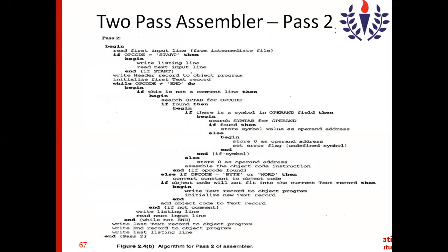Hi everyone, let us resume the session with the two-pass assembler. We discussed about the pass one algorithm in the previous session — the steps involved, how the assembler processes the source program, and how it generates the intermediate file. Now we move on to pass two of the two-pass assembler.